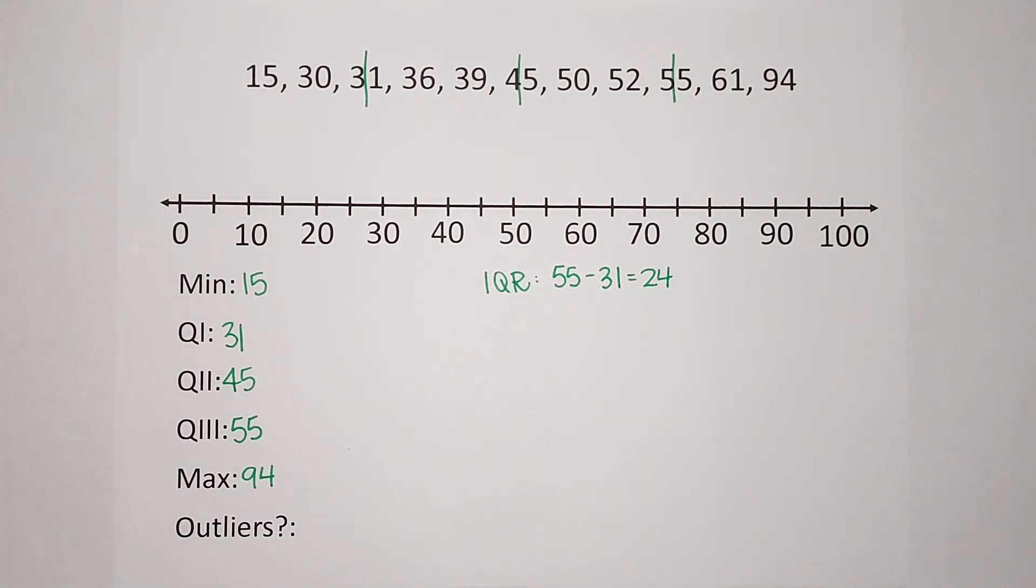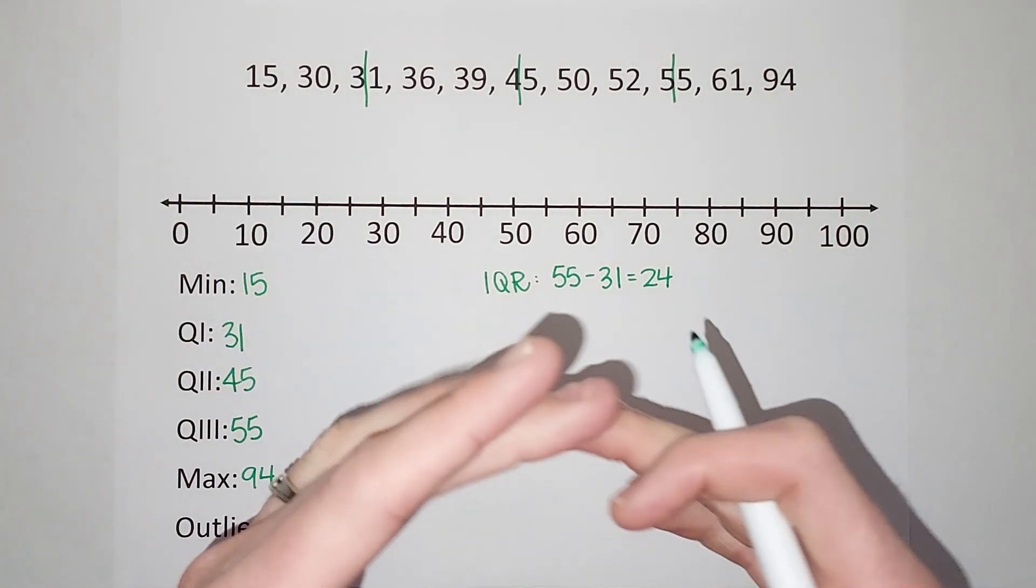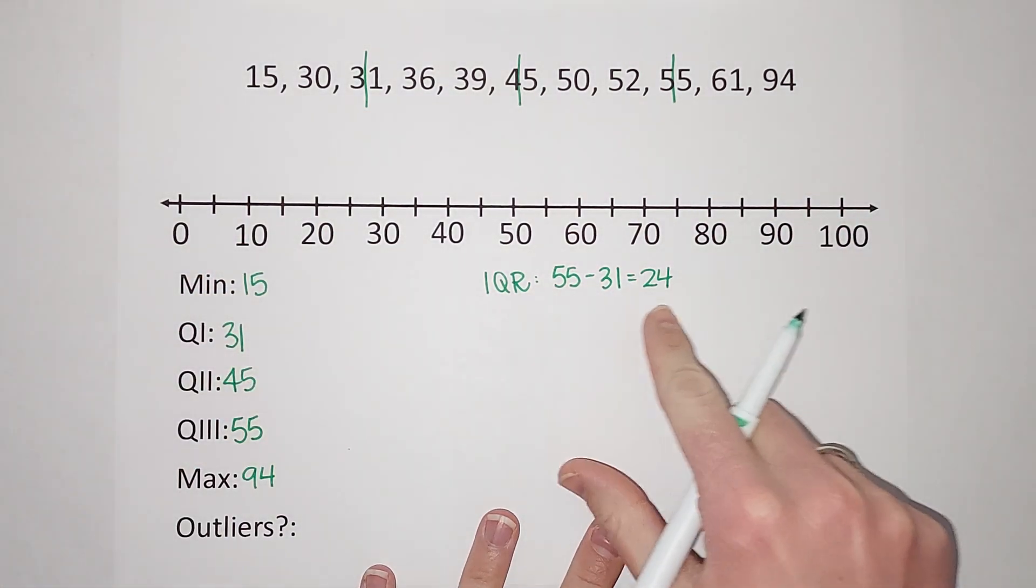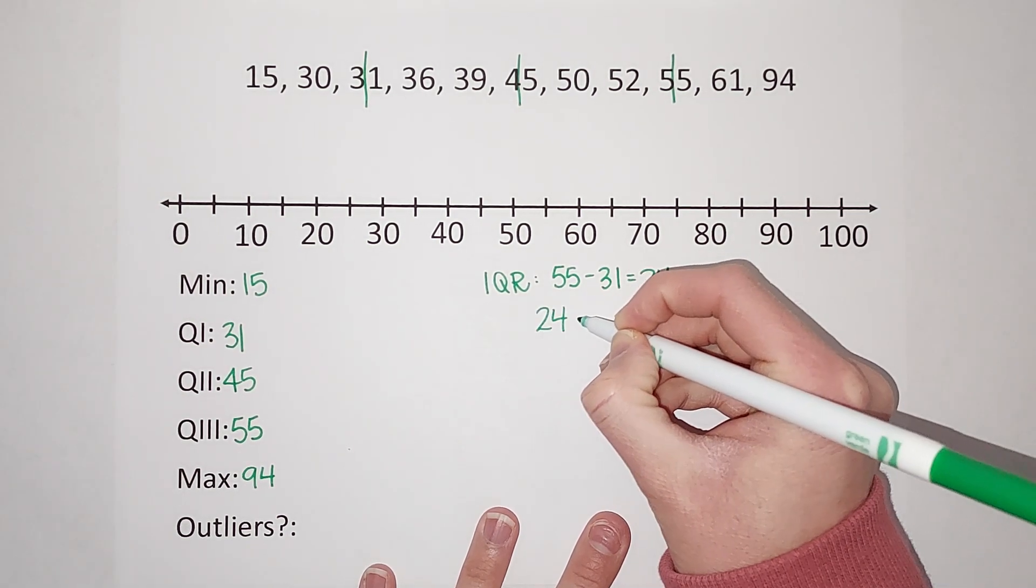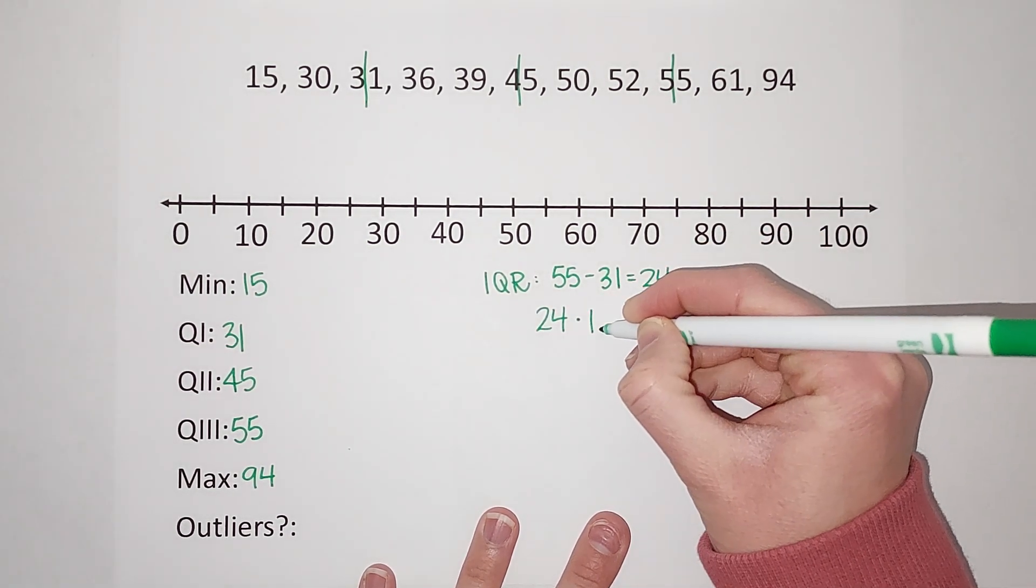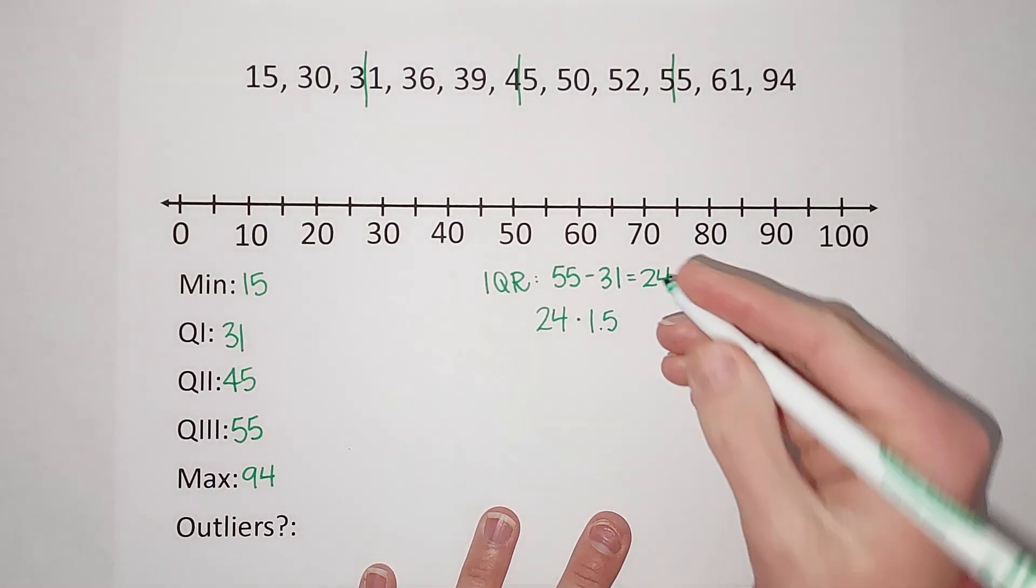Now what we do with this number, which is the length of my box when you make a box and whisker or a box plot—that is the length of my box—we are going to take that 24 and multiply it by 1.5.